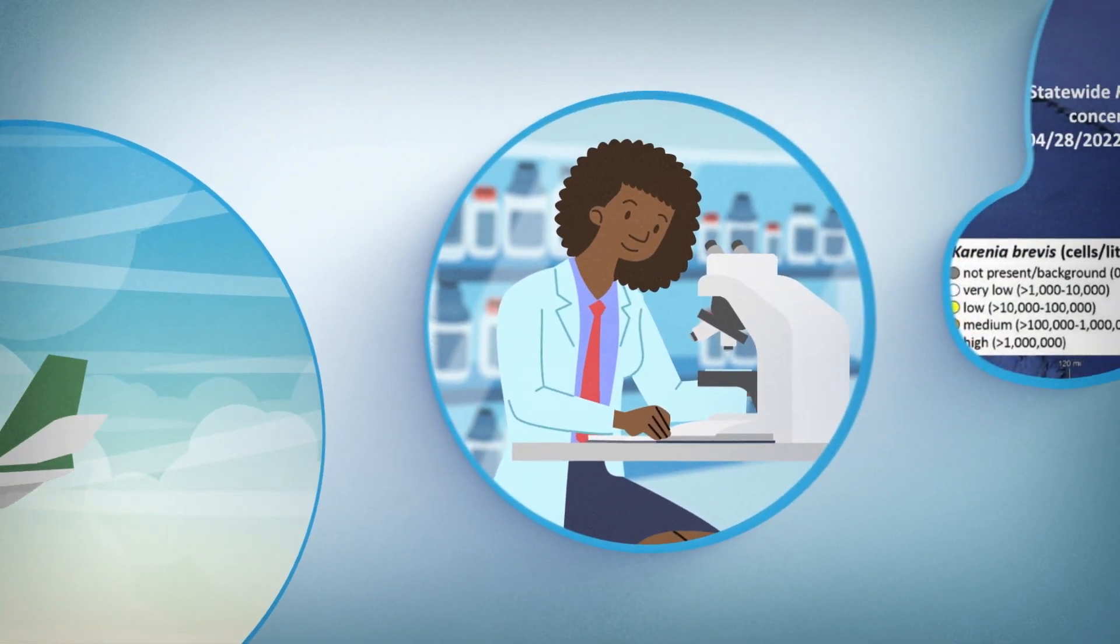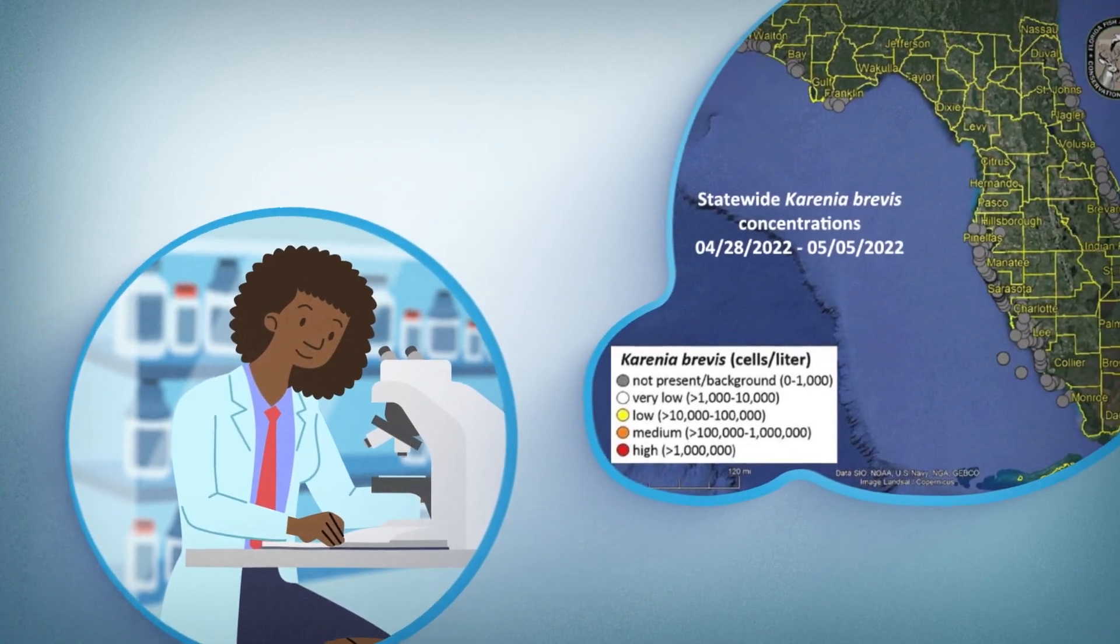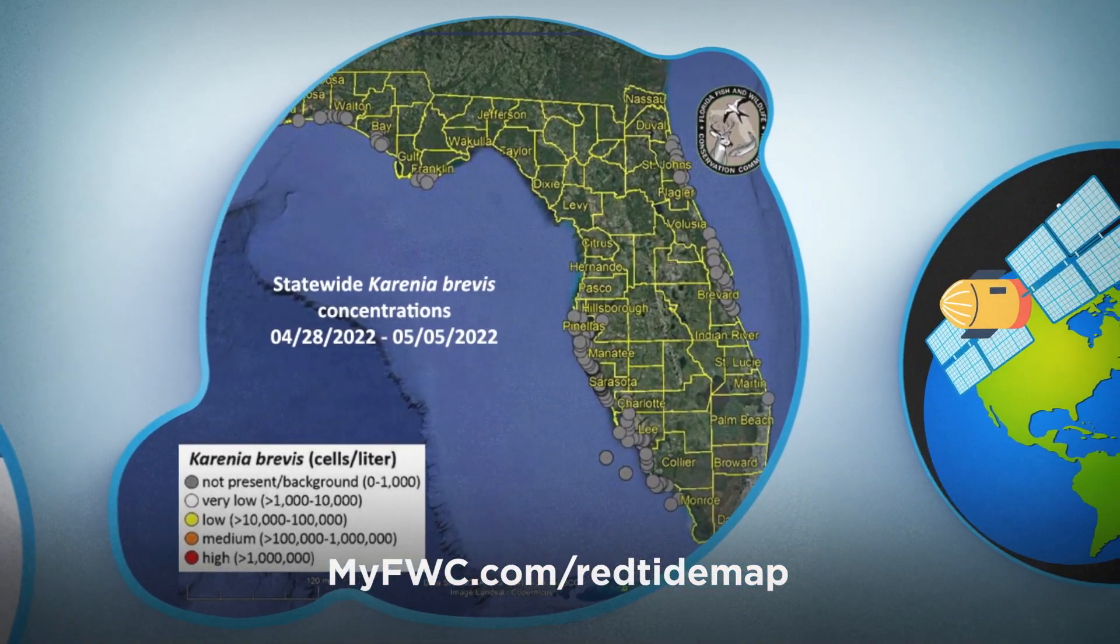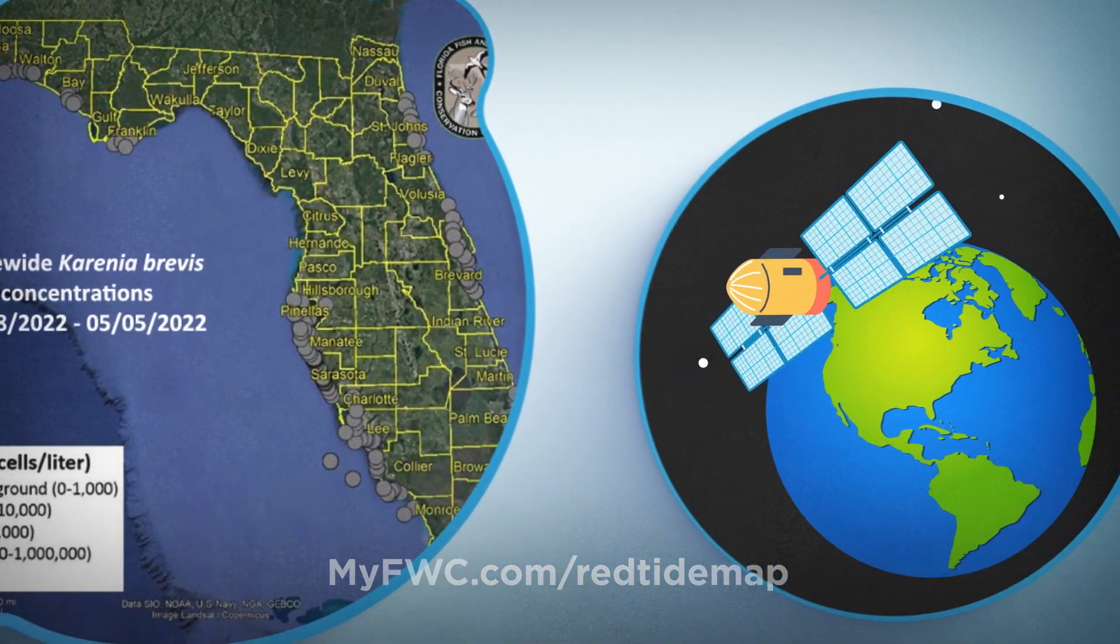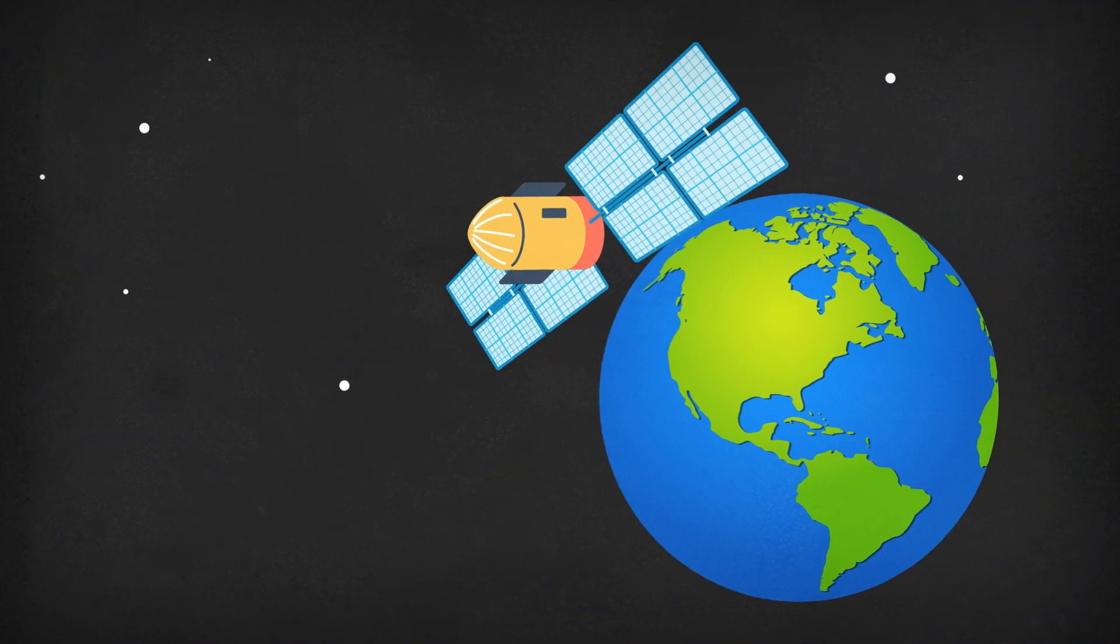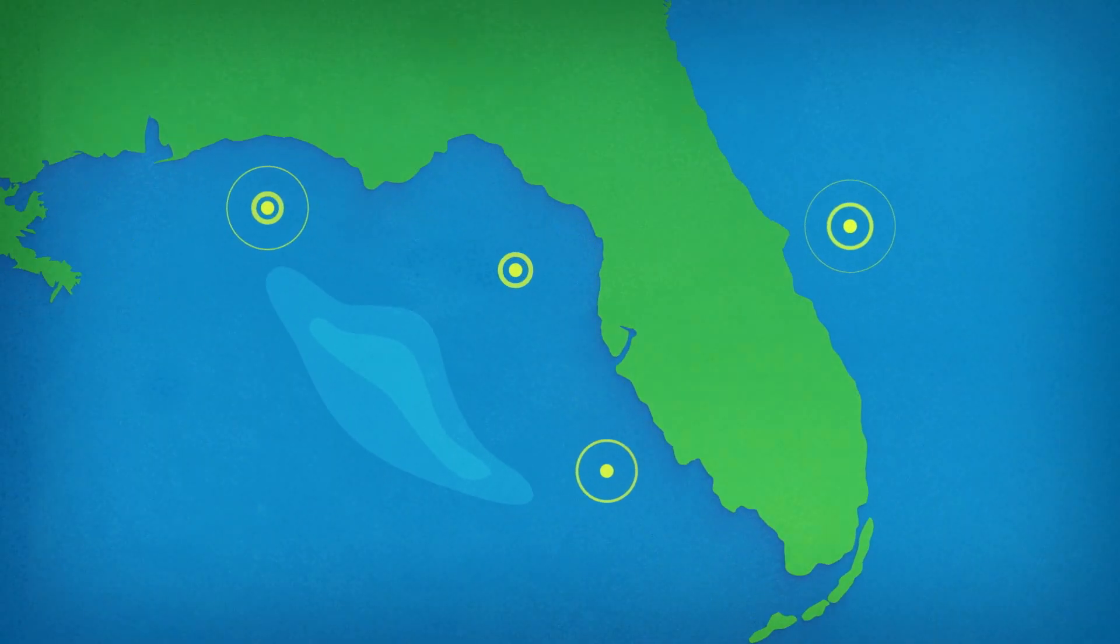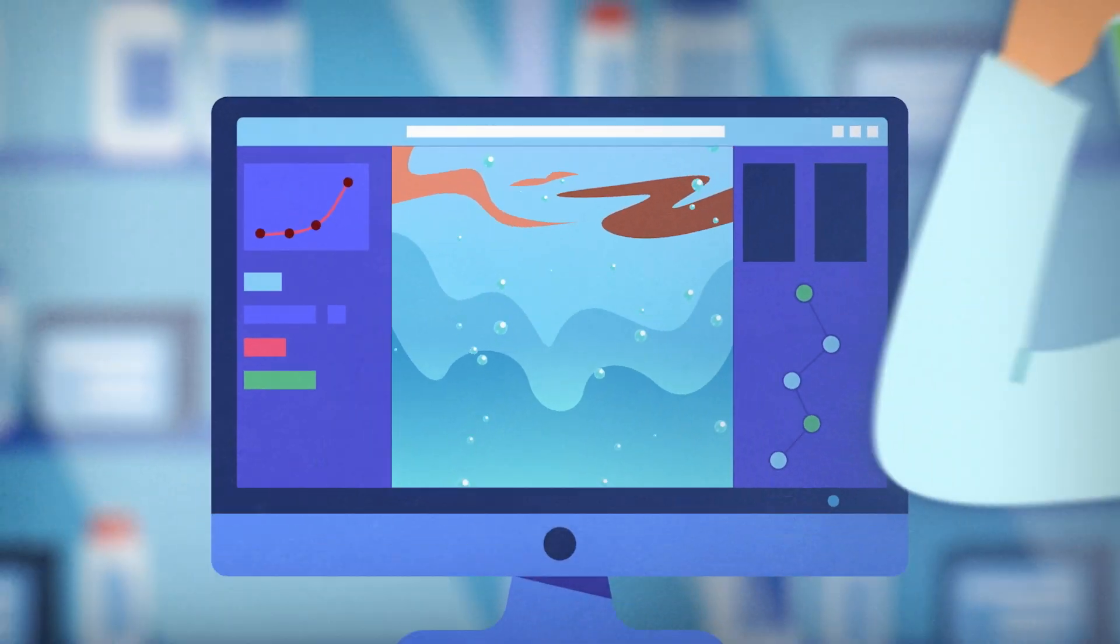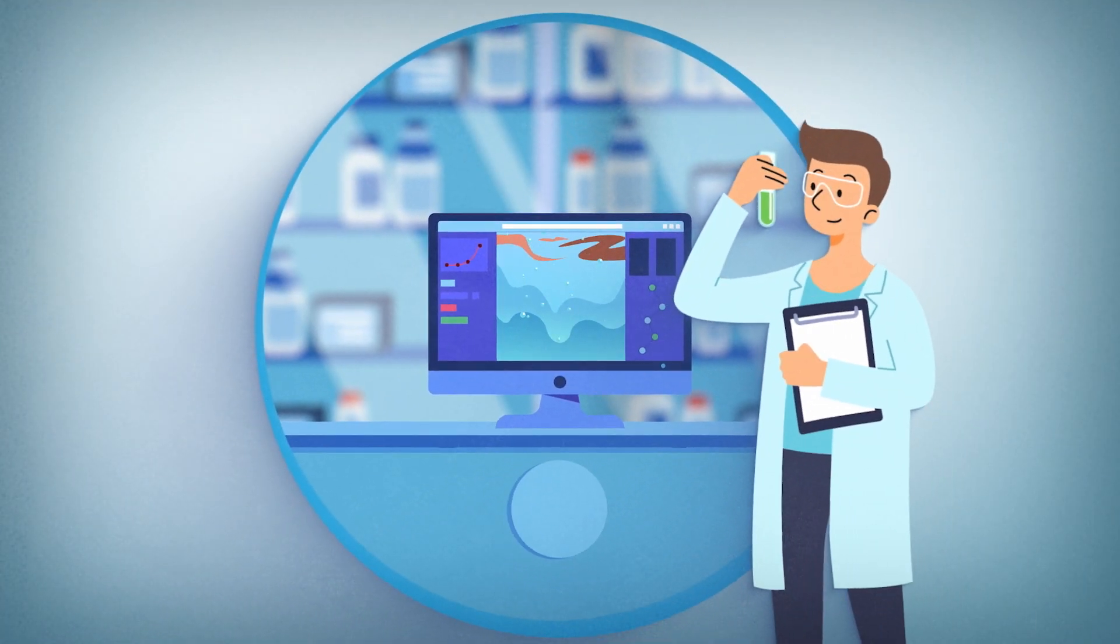Every day, samples are screened for red tide using microscopy, and results are posted on FWC's Red Tide Weekly Sample Map. Other tools like satellites and underwater samplers can collect critical information and are used to track or predict red tide. Red tide data are put into computer models to forecast movement of blooms or likelihood of respiratory irritation.